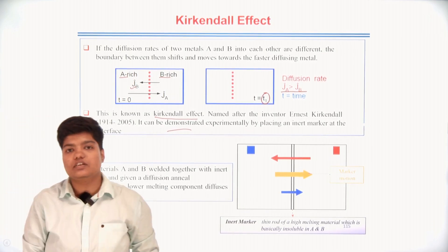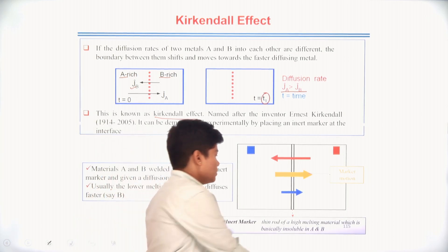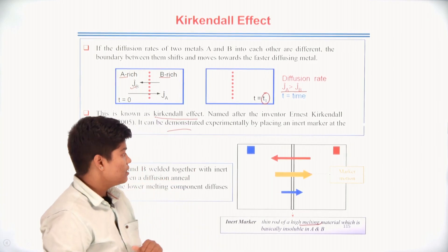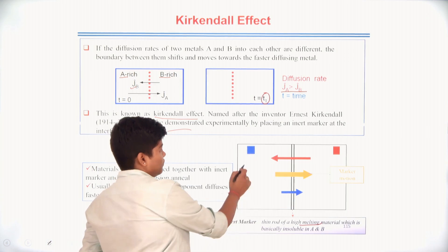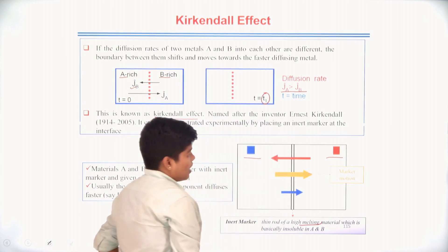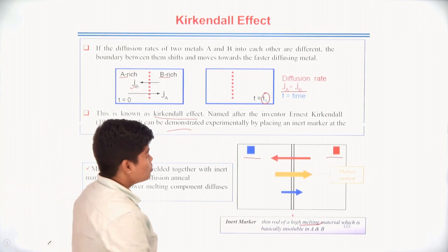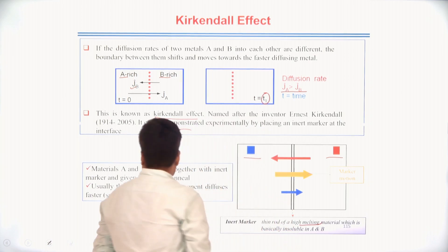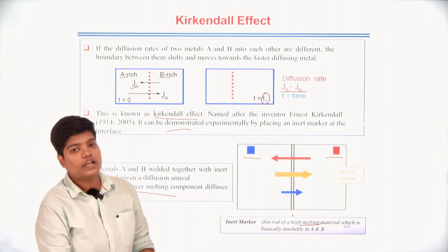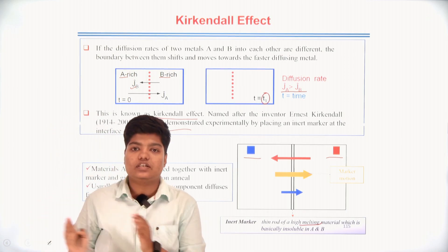What is an inert marker? The inert marker is a rod of high melting point material that is insoluble in both A and B. Between two different metal blocks the marker is placed. After diffusion, the marker will move — the motion of the marker happens towards the most rapidly moving species. Generally, the metal of lower melting point will move faster than that of higher melting point.